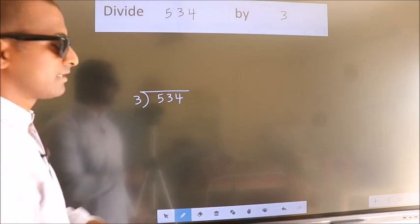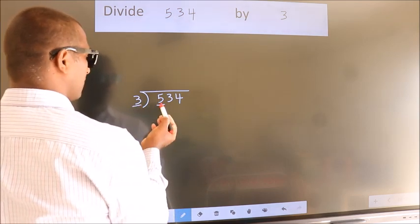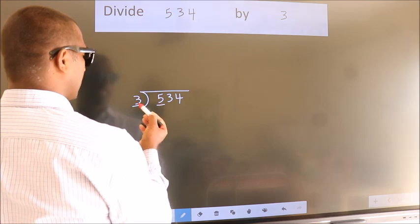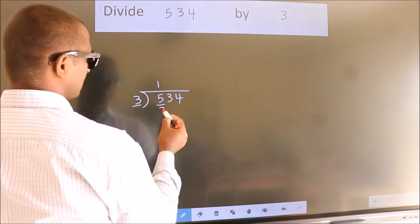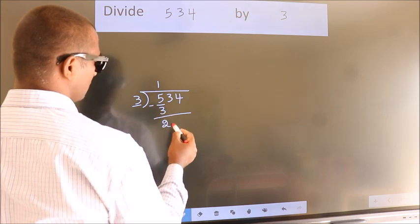Next, here we have 5, here 3. A number close to 5 in the 3 table is 3 ones, 3. Now we should subtract, we get 2.